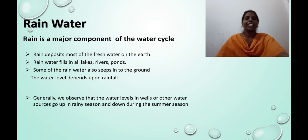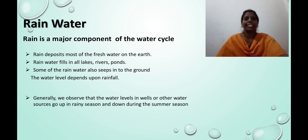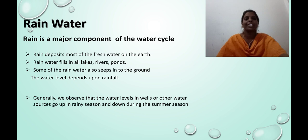Have you ever seen raining? Yes. Rainwater. Rain is a major component of the water cycle. Rain deposits most of the fresh water on the earth. Rainwater fills all lakes, rivers, and ponds. Some of the rainwater also seeps into the ground. The water level depends upon rainfall. Generally, we observe that the water levels in wells or other water sources go up in the rainy season and down during the summer season.